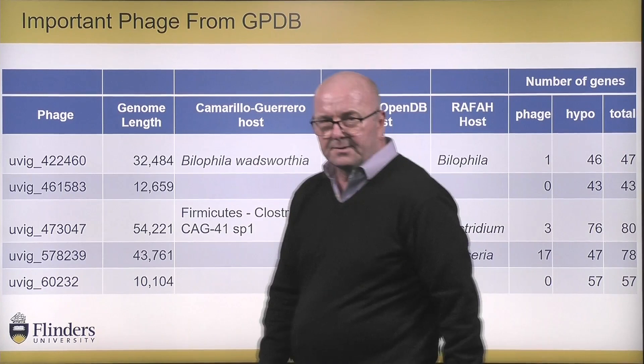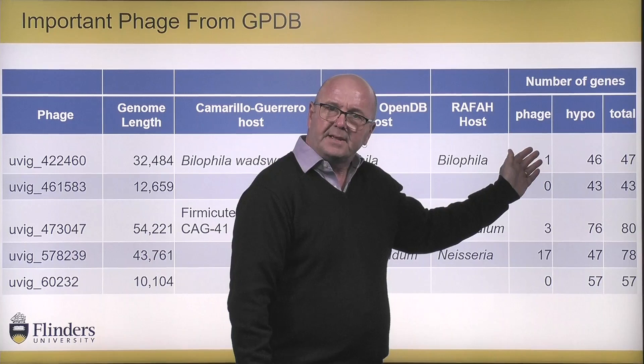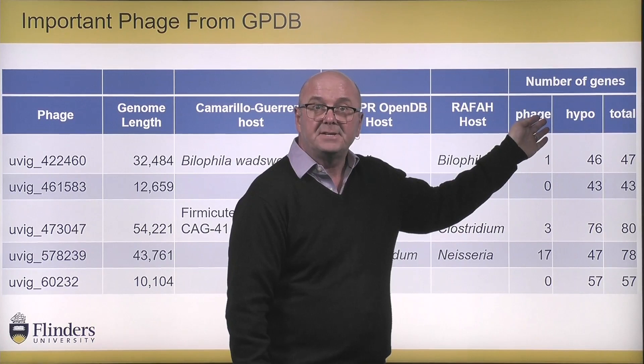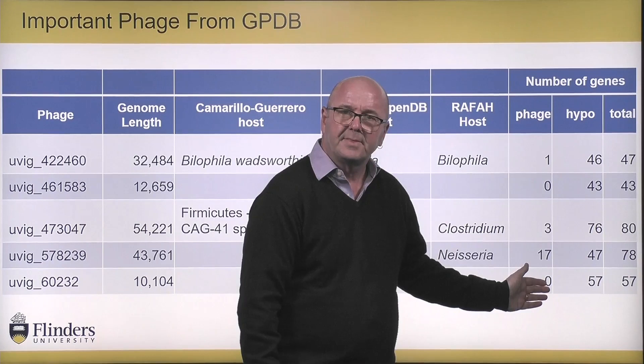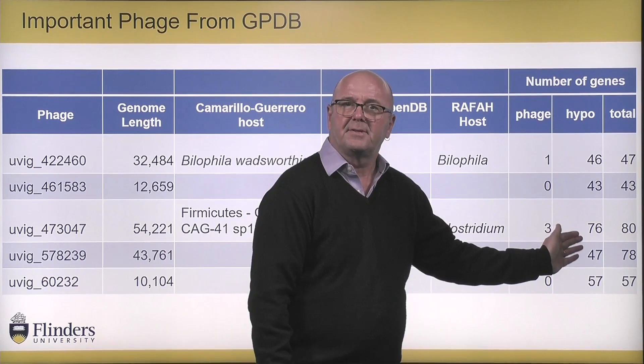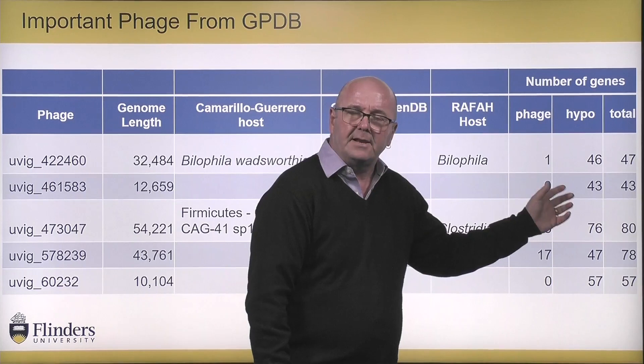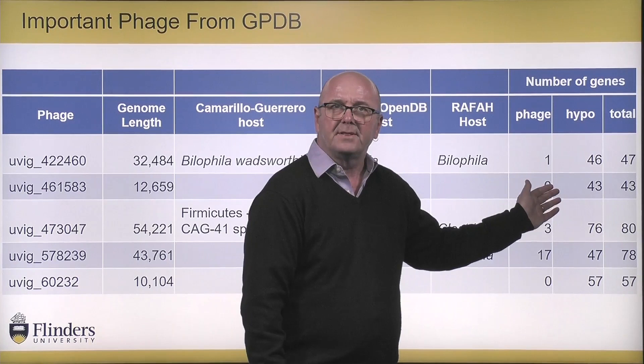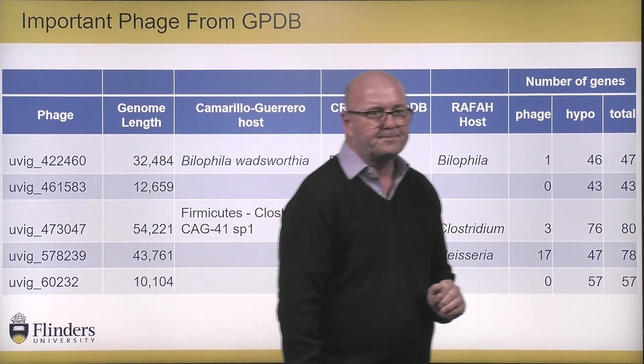One other thing to note when we look at these phage genomes is what their genomes look like. We can look at the phage genes and ask whether they look like known phage genes — and most of the time, of course, they rarely do. Most of the genes we find in phages are just hypothetical proteins. In my group and others, we're really interested in trying to understand this viral dark matter — what are these phages doing, and what are these genes doing in these phages?